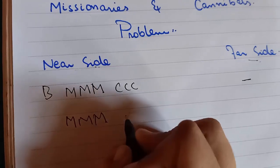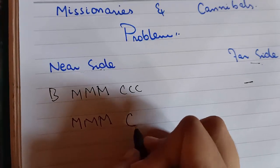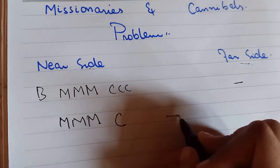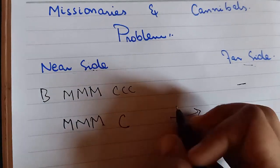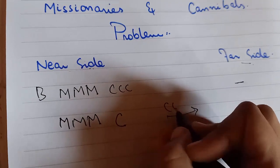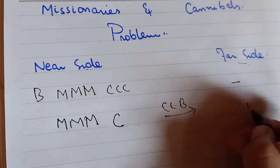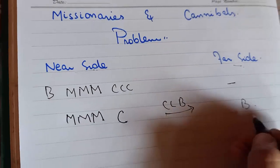Here we have three missionaries and one cannibal at the near side. At the far side we have two cannibals and one boat.